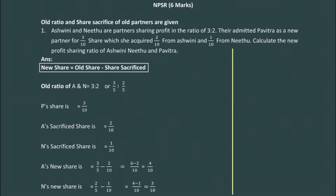We need to calculate the new profit sharing ratio of Ashwini, Nitu, and Pavitra. If you analyze this problem, they have not given the sacrifice ratio - they only give the share sacrificed. For that we need to apply the formula: new share = old share minus share sacrificed. The given data is: old profit sharing ratio 3:2, Pavitra's share 3/10, Ashwini sacrifices 2/10, and Nitu sacrifices 1/10.